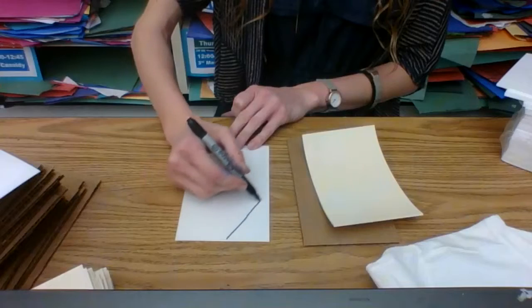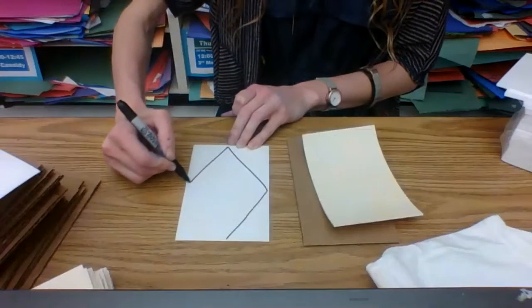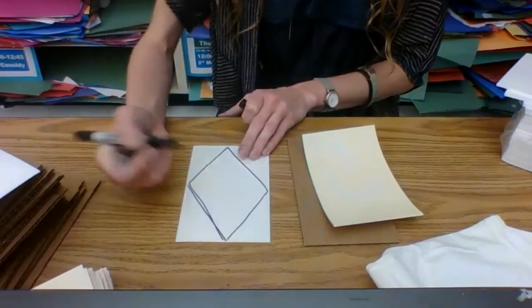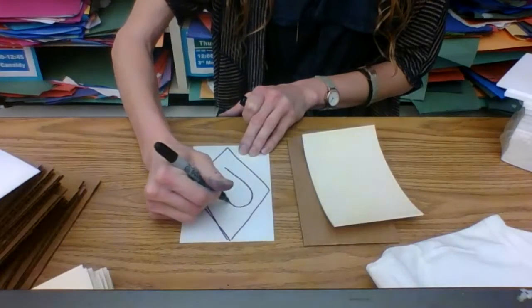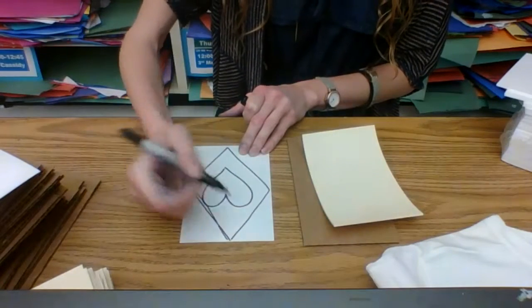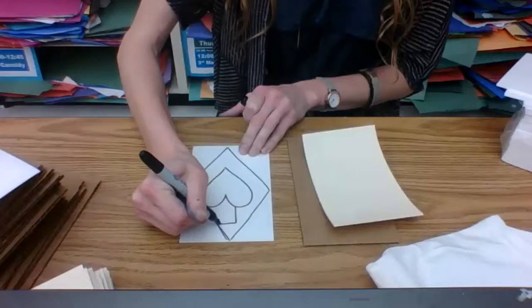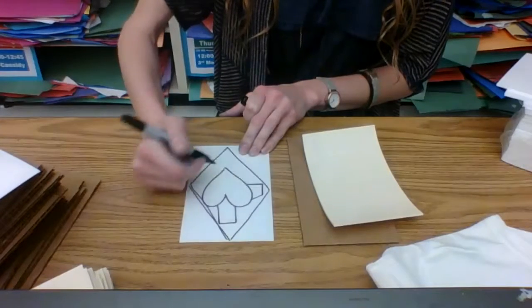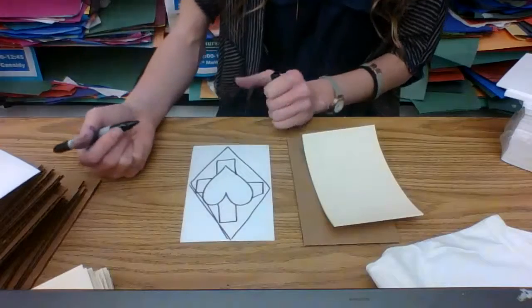Whatever you would like. So if I'm going with my diamond theme, let's say that I do my diamond, and then I have a large heart, and then I break up the background with a positivity symbol. Those are the symbols that I'm going with.